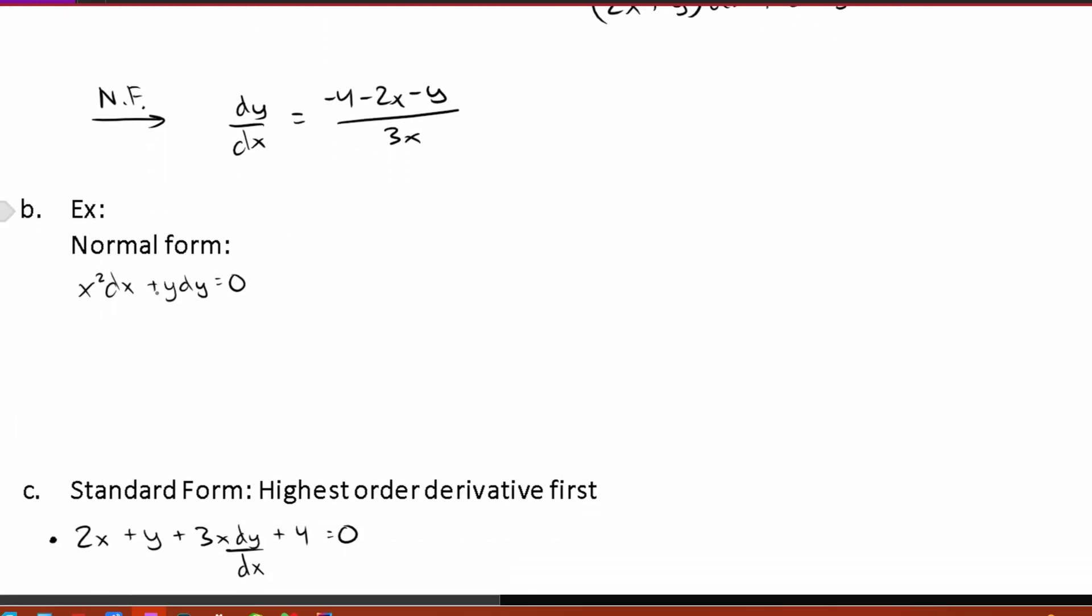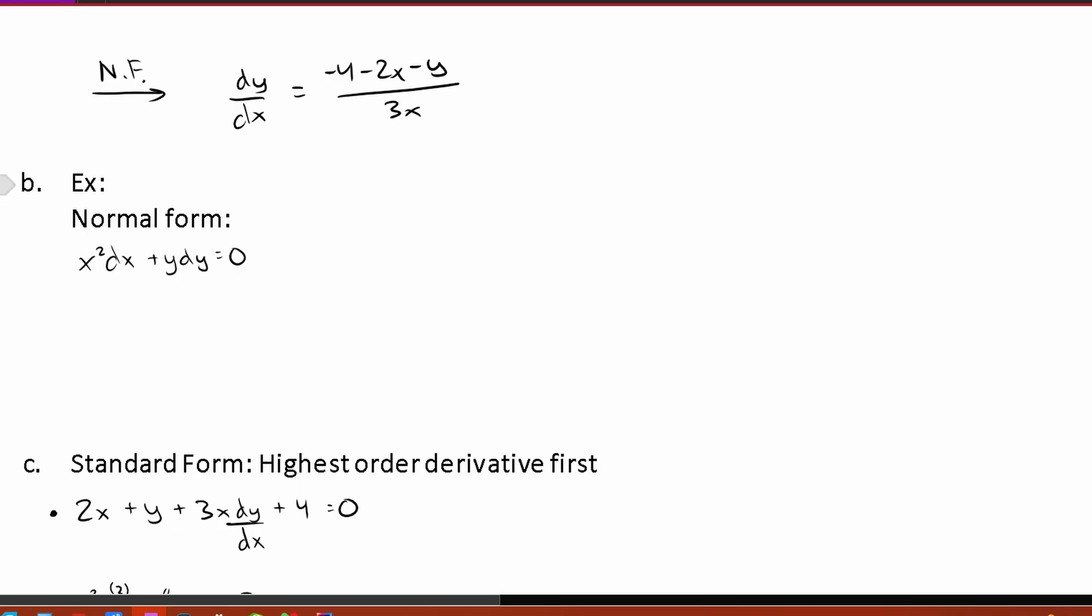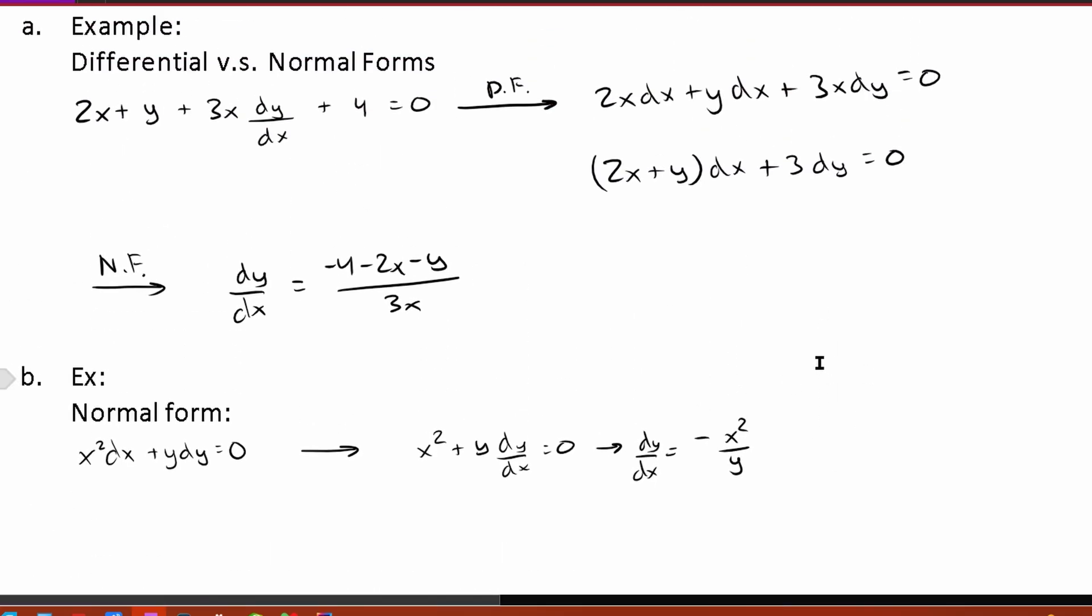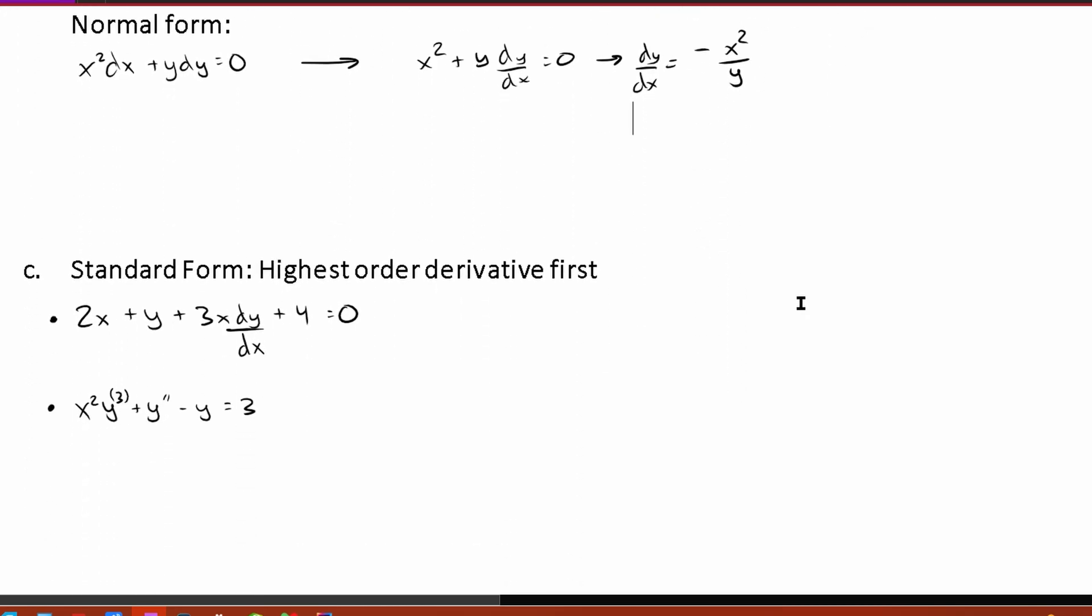So what's the normal form of this next one? Well the normal form of this next one again it's like we were doing previously. Let's just divide everything by dx and then move everything over to the other side. So dividing everything by dx we are going to get x squared plus y and then we are going to have dy over dx and this is equal to zero. So moving everything over we'll just have negative x squared over y is equal to dy over dx. So that's going to be the normal form and that's the differential form. Hopefully you're pretty familiar with that now and we can move on to standard form.